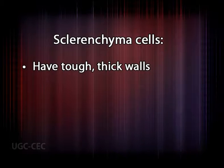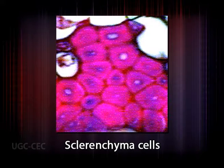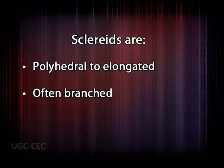Sclerenchyma cells have tough, thick walls and usually lack living protoplasts at maturity. Their secondary cell walls are often impregnated with lignin. They are of two types: fibers and sclereids. Fibers are generally long and slender cells. Sclereids are variable in shape — from polyhedral to elongated — but often branched.